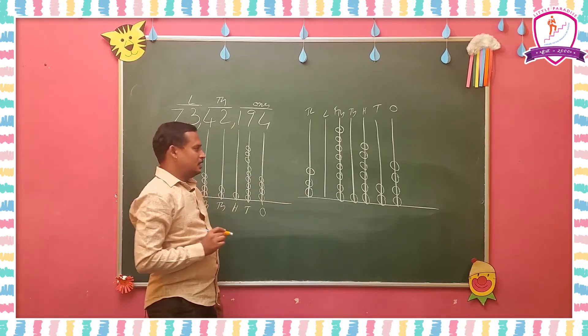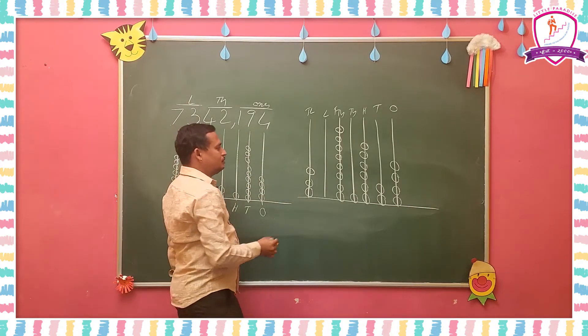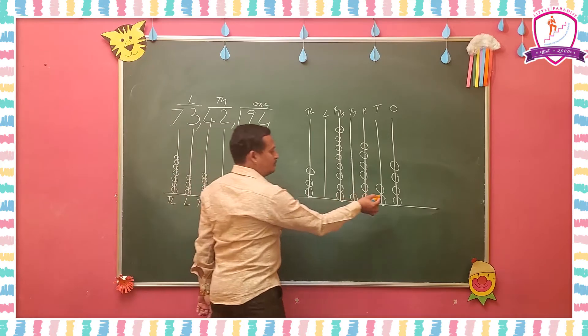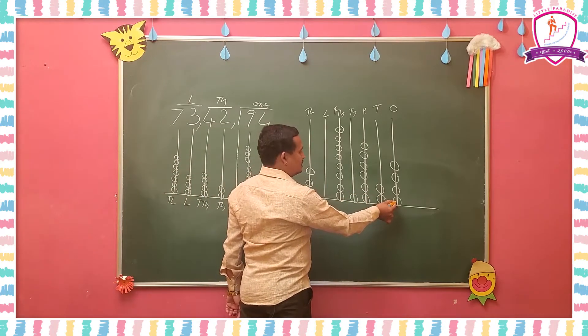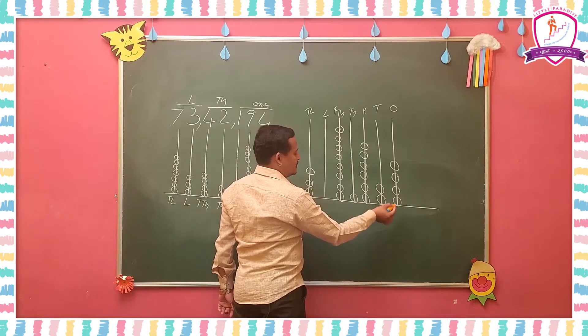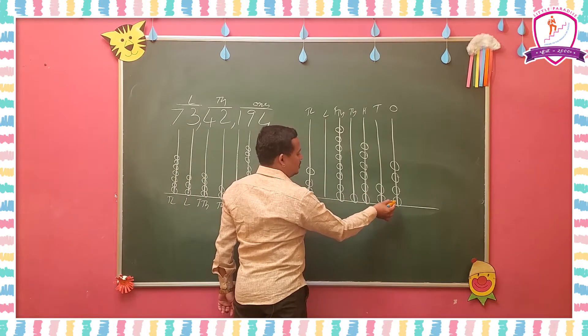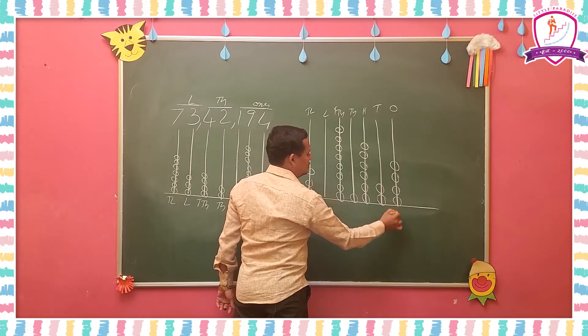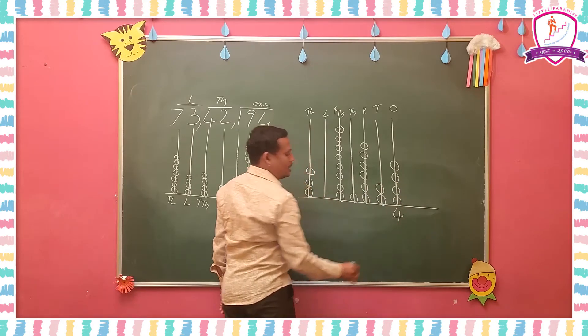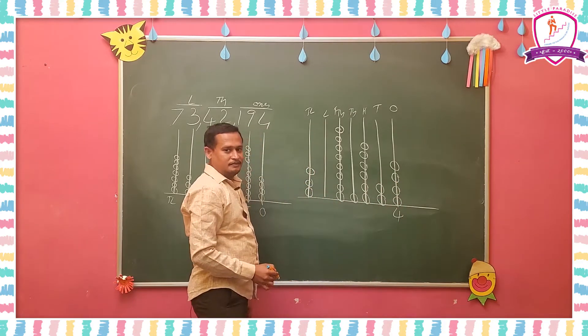Here I draw the abacus. You have to count the bits. How many bits are there in the 1s place? 1, 2, 3, 4. There are 4 bits, so you have to write 4 in the 1s place.